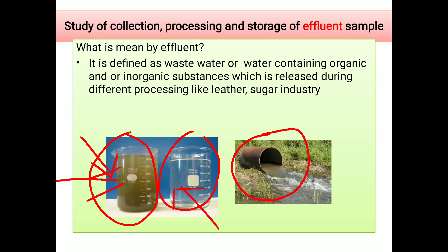So, what could be the definition of effluent? It is defined as a waste water or water containing organic and/or inorganic substances, and this water is released during different processing like leather industry, sugar industry, or any other kind of industries. That kind of water is called as effluent.